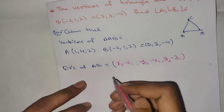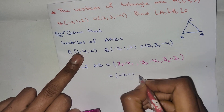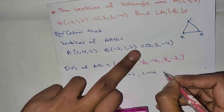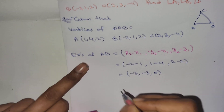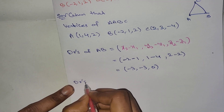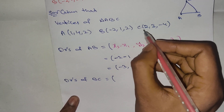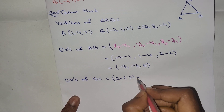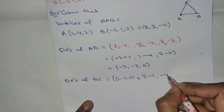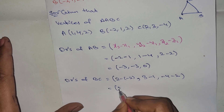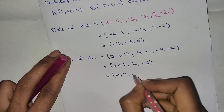So for AB: x1, y1 — we get 2 minus 1, 1 minus 4, 2 minus 2, giving minus 3, minus 3, 0. For DRs of BC — B point to C point — we get: minus 2, 2 minus minus 2, 3 minus 1, giving 4, 2, minus 6.